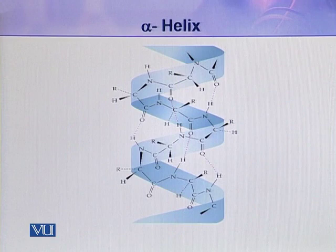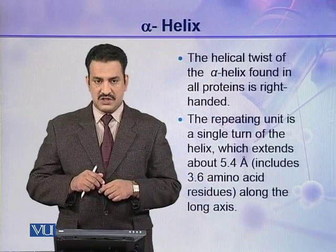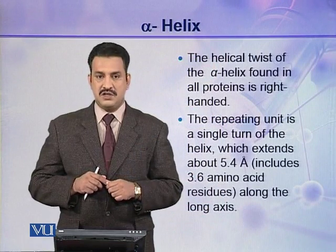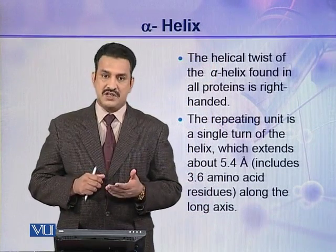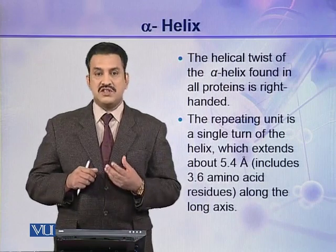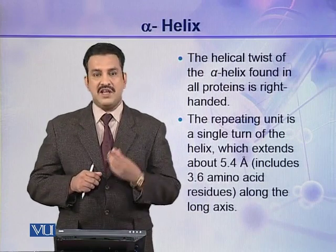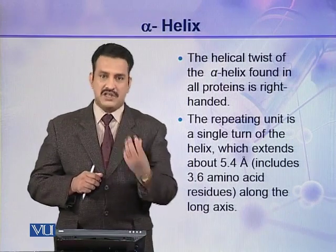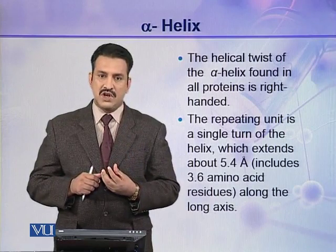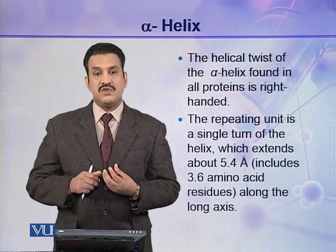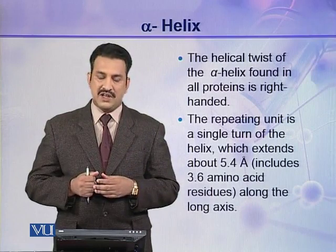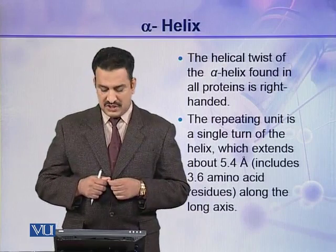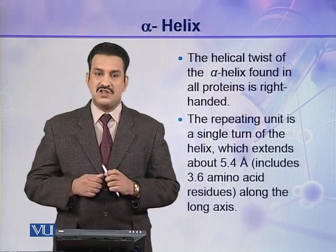The helical twist of the alpha helix found in all proteins is right-handed. We cannot describe the direction of a helix as clockwise or anti-clockwise — those terms are not appropriate for helices. Instead, we say it is right-handed coiling or left-handed coiling, and the alpha helix in proteins is right-handed coiling.